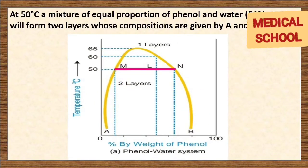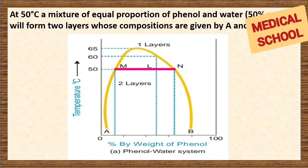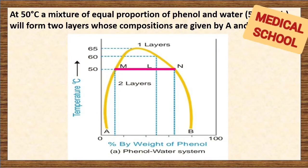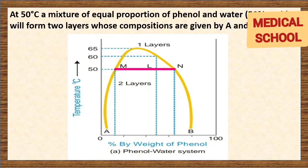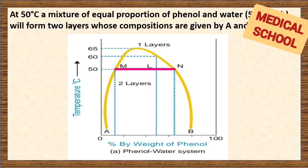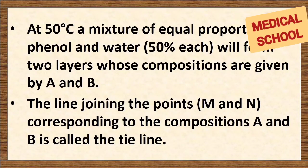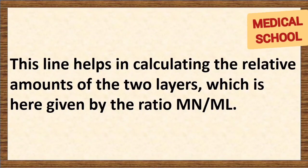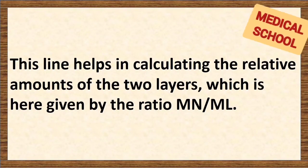At 50°C, a mixture of equal proportion of phenol and water will form two layers whose compositions are given by A and B. The pink line joining points M and N, corresponding to compositions A and B, is called the tie line. This line helps in calculating the relative amounts of the two layers, given by the ratio MN upon ML.